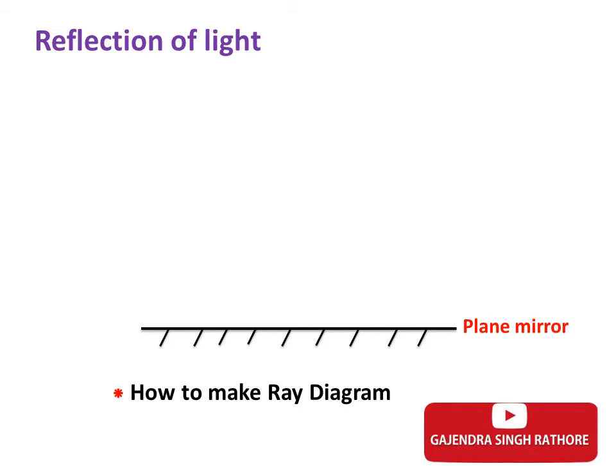Now, draw a point of incidence on this horizontal line here like this. You know the point of the mirror surface where incident rays strike and reflected ray bounces off is called point of incidence.